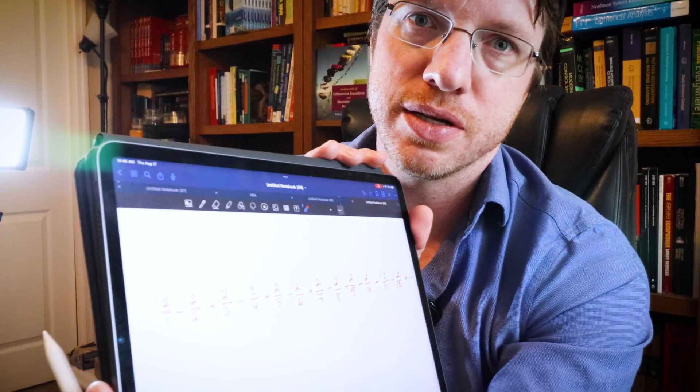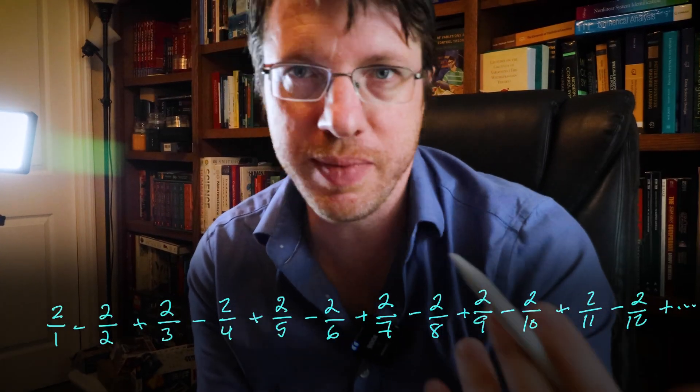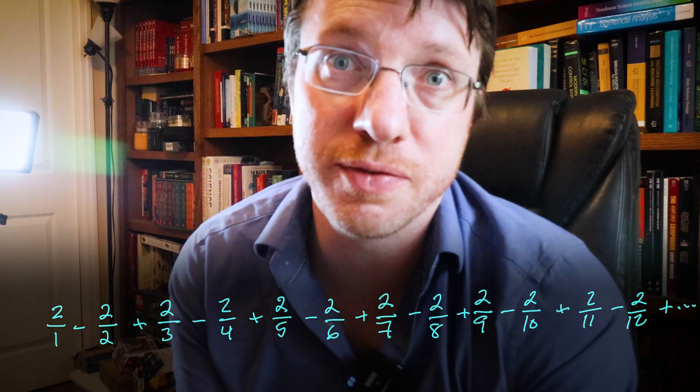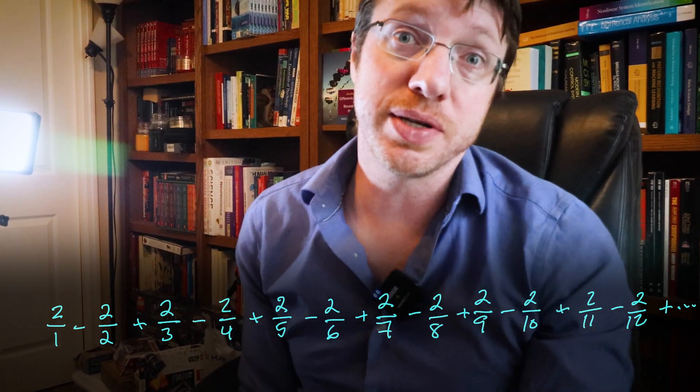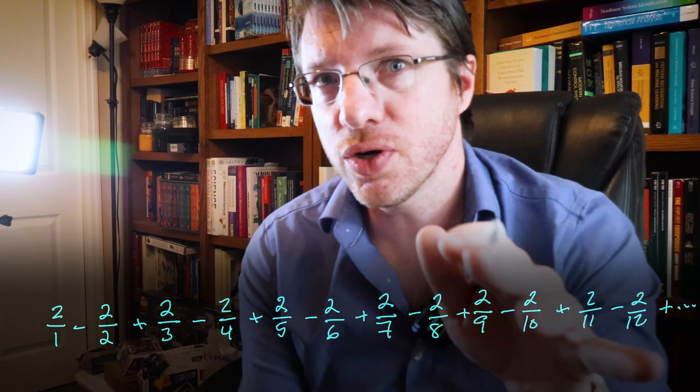Three weeks later. All right. So this is taking me a few tries to get this explanation right. What happened is that Dirichlet looked at the alternating harmonic series and he doubled it.